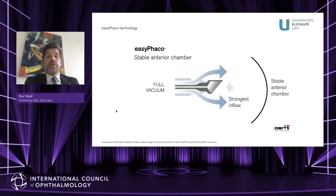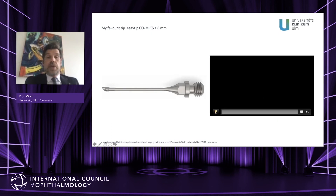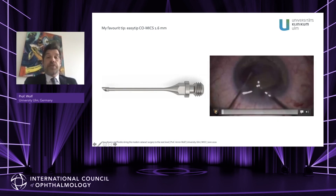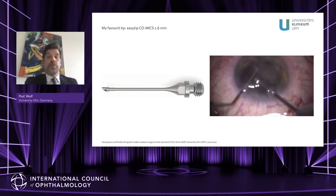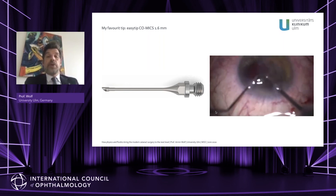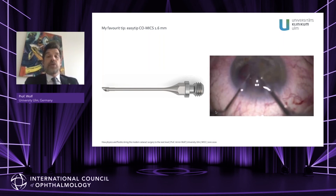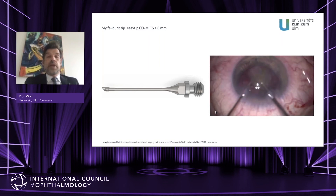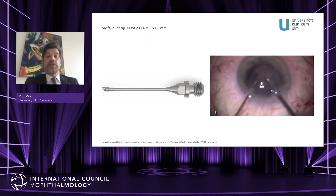The inflow into the anterior chamber is very controlled and gives you a stable anterior chamber throughout all your procedures. My favorite tip using easy FACO — which comes in different sizes, 2.2 as well as 1.6 — is the 1.6 tip. That allows you to perform cataract surgery using the speed mode with a strong holdability, as you can see in this video, with strong efficiency even in traumatized eyes.